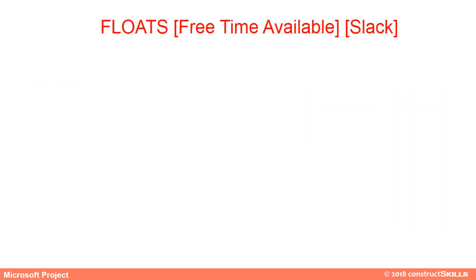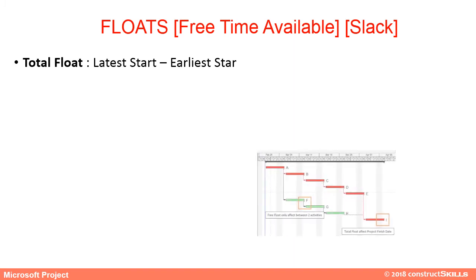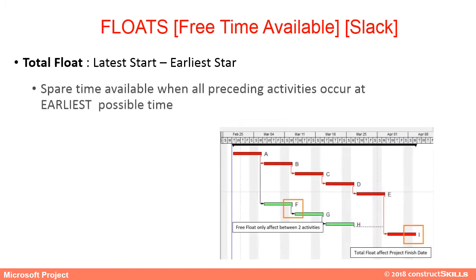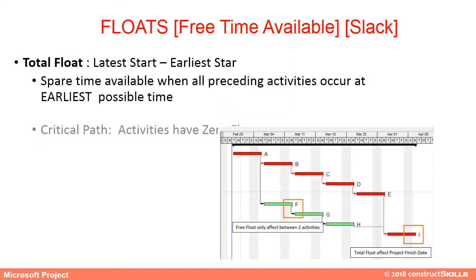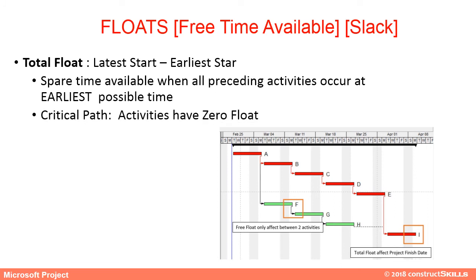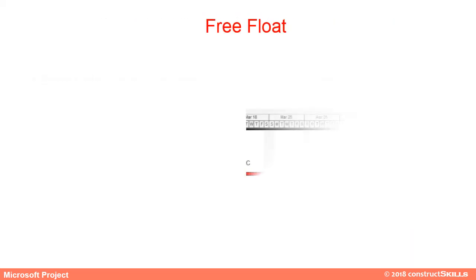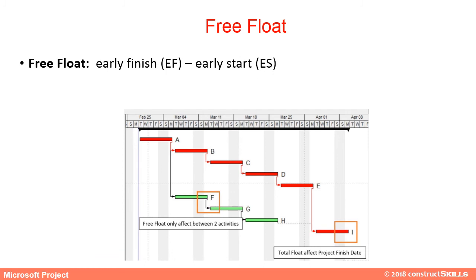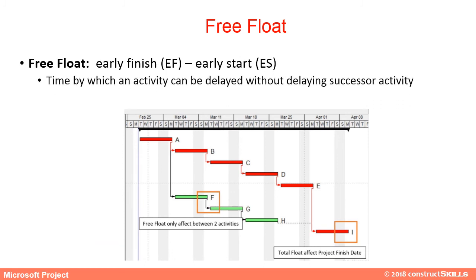Free time available to a task is called float, and it is of two types: total float and free float. Total float is the spare time available when all preceding activities occur at the earliest possible time; critical path activities have zero total float. Free float is the early finish minus early start — it is the time by which an activity can be delayed without delaying the successor activity.